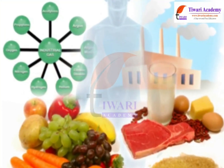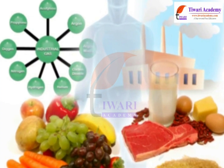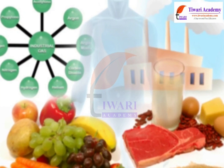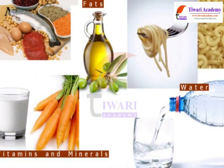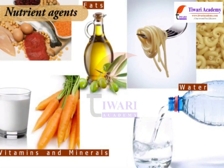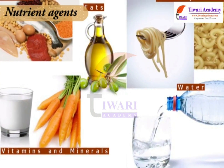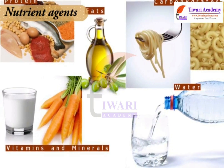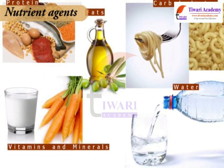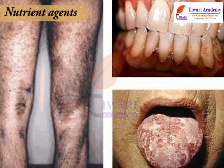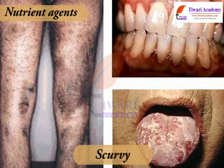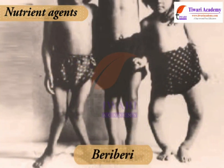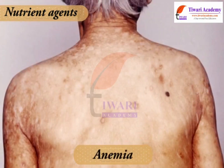There are other environmental factors which can also cause diseases when in excess, deficient or absent. Nutrient agents comprise food components like carbohydrates, protein, etc., which cause deficiency diseases or obesity due to excess intake. Examples of deficiency diseases include scurvy, marasmus, beriberi, anemia, etc.